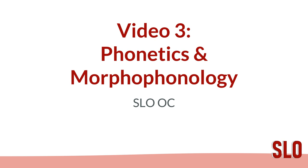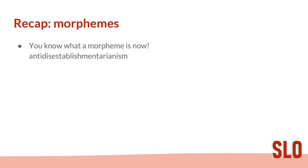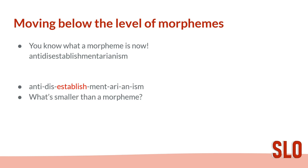Hello, and welcome to the third video in our video series for the Singapore Linguistics Olympiad. Today's topic is Phonetics and Morphophonology. Just a quick recap — do you still remember what a morpheme is? Test yourself and see how many morphemes there are in the word anti-disestablishmentarianism. If you found seven morphemes in that word, congratulations!